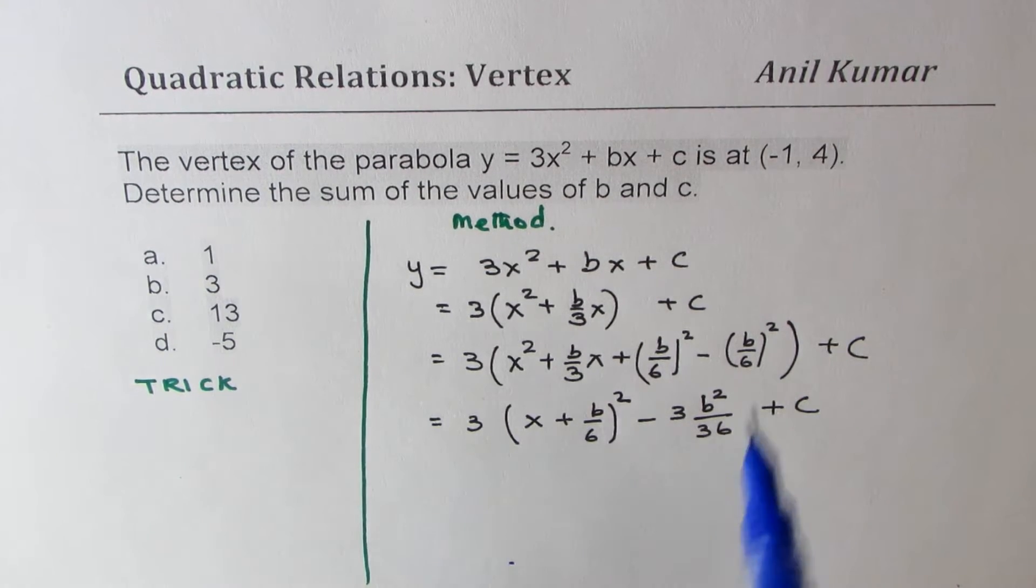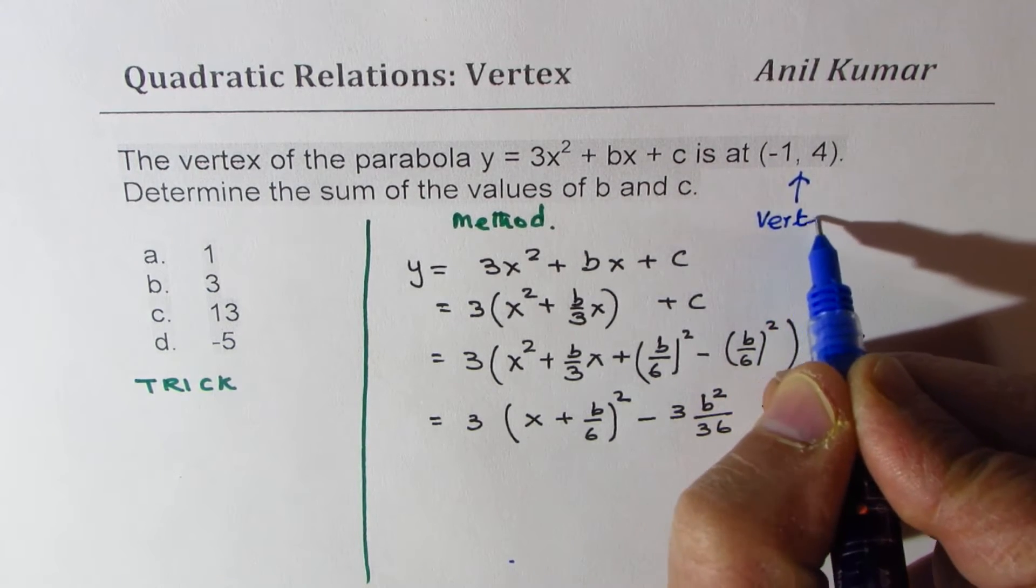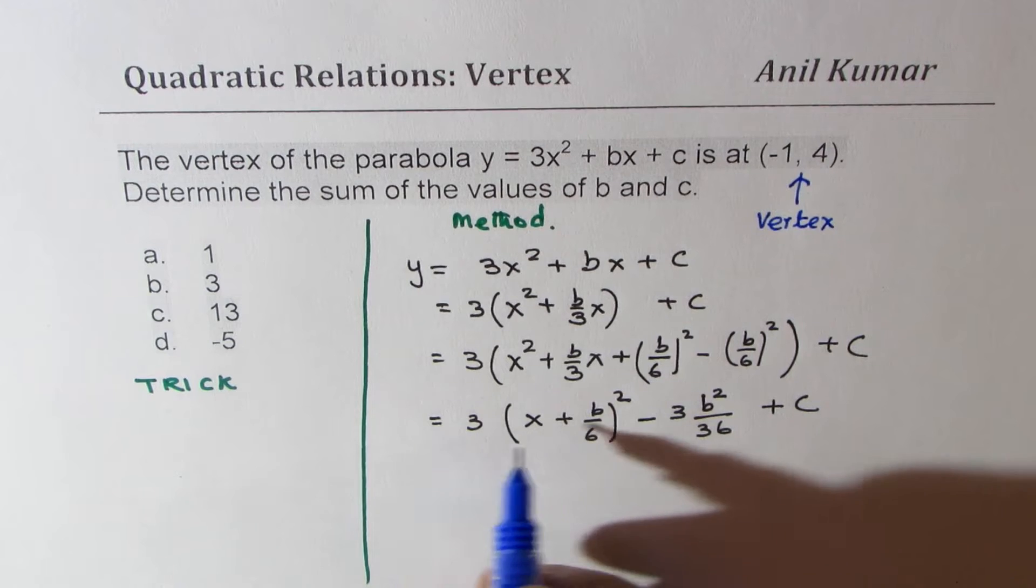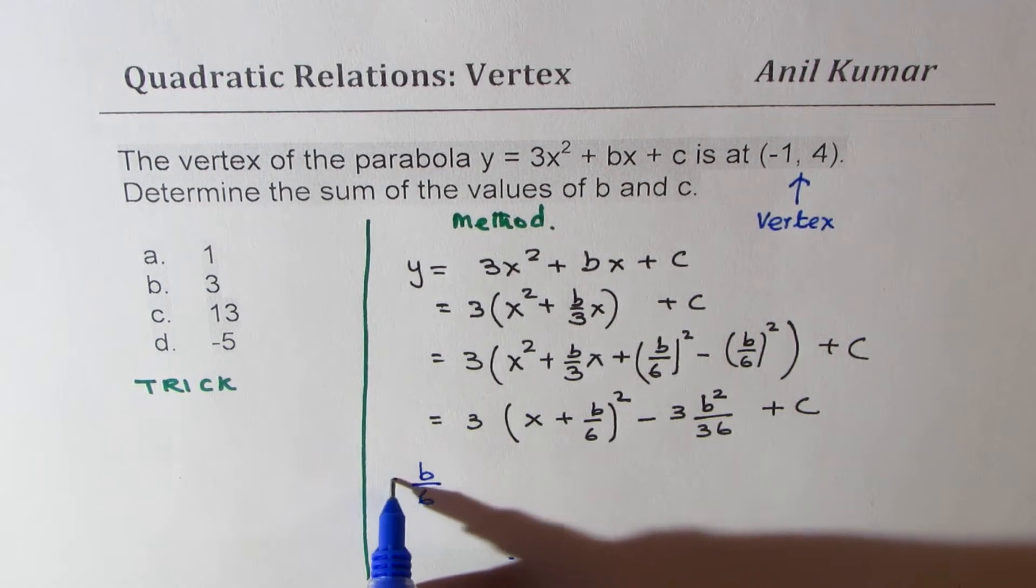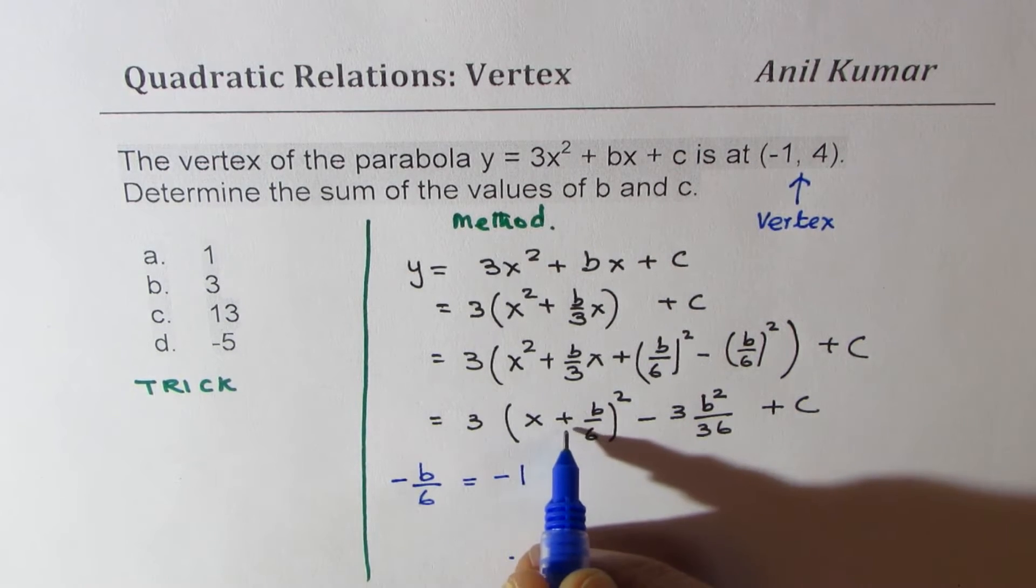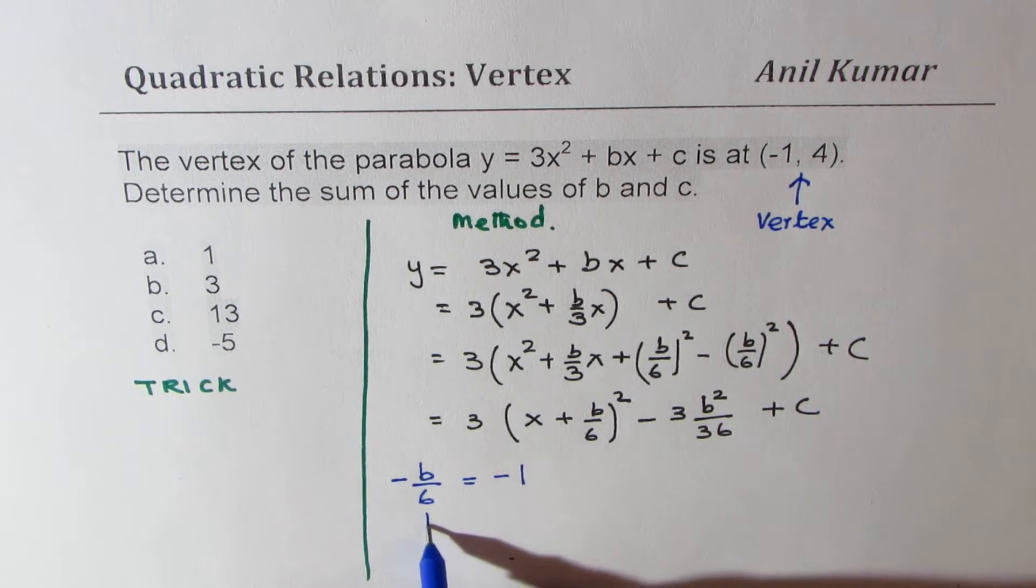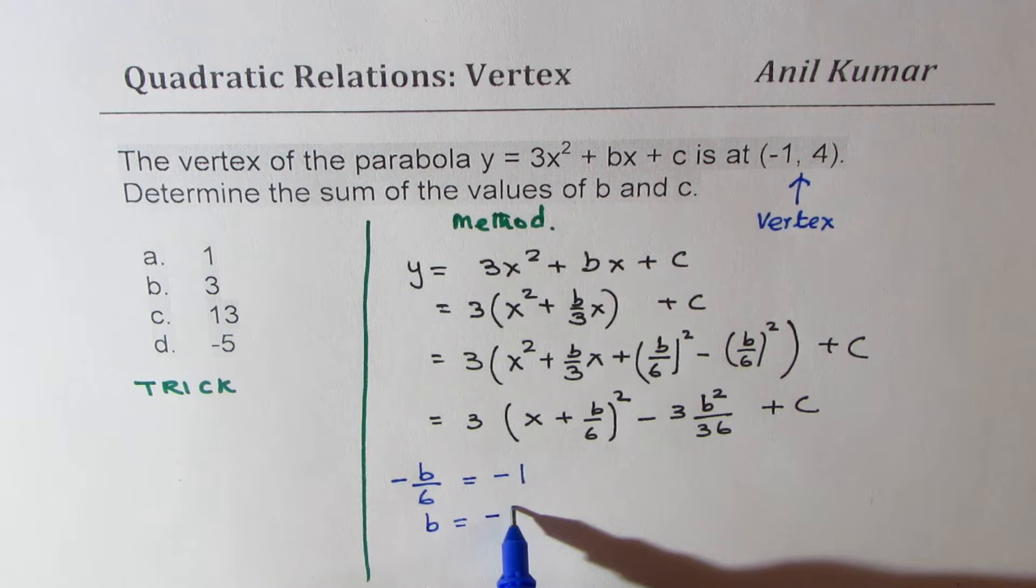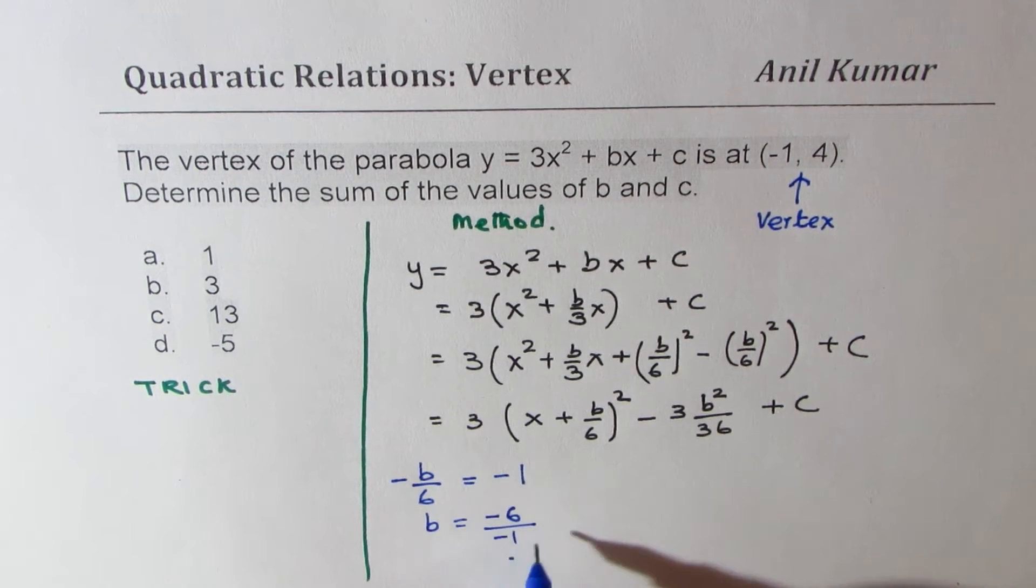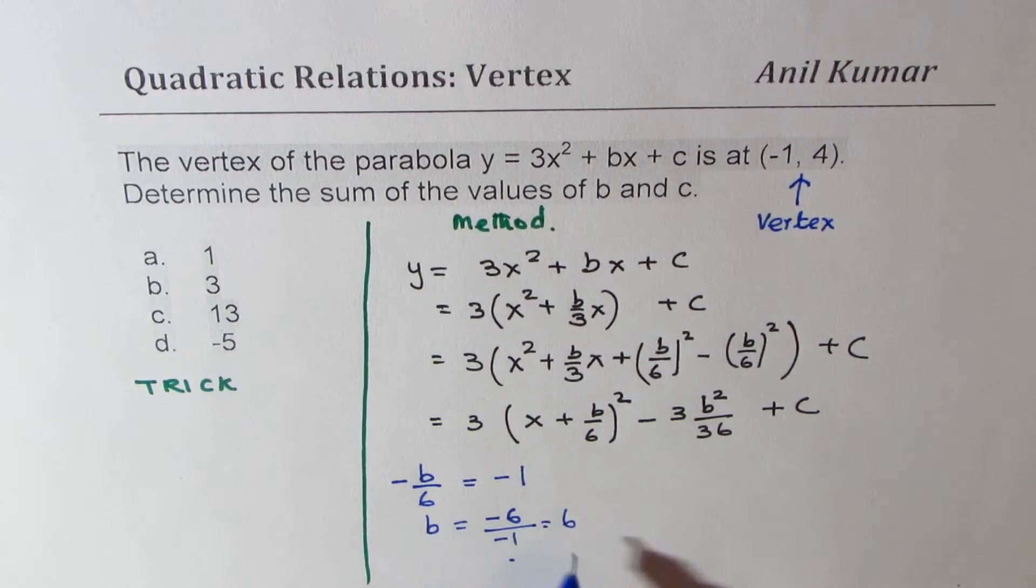Now from this, you can always see that the vertex given to us is at minus 1 and 4. That means that the negative value of b over 6 should be equal to minus 1. That is the value of the vertex. So from here, we can get b equals to 6. Minus, minus cancel, you get 6. So we get value of b as 6.